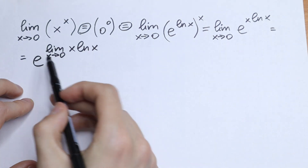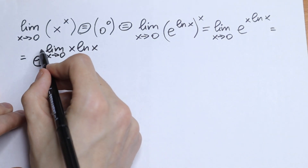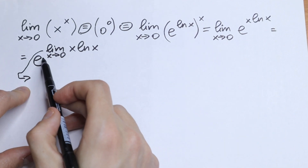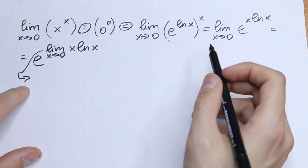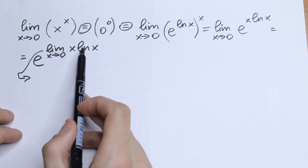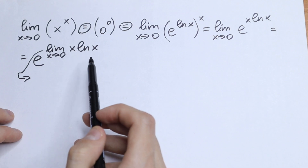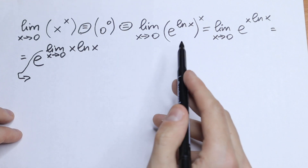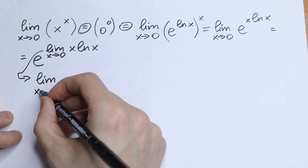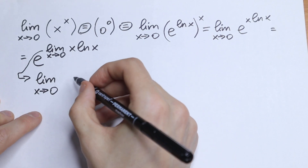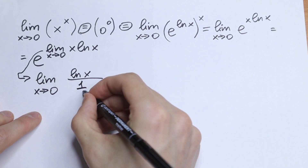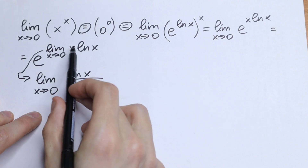So let's find this inner limit. Once we find it, we plug in to the power of e and we will have our answer. This limit can be written as the limit of natural log x over 1 over x — we bring the x to our denominator. So this limit equals the limit as x approaches 0 of natural log x all over 1 over x.